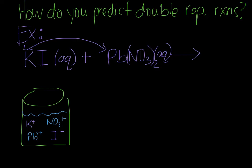These ions are just floating around in solution. The lead and nitrate are going to be attracted to one another due to positive and negative charge, and the same goes for potassium and iodide. We're going to assume these produce new compounds. A good way to do this is to figure out the charges before switching. Potassium is in group one, so it's plus one. Lead has a plus two charge because there's a two next to the nitrate. Iodine is in group 17 and has a negative one. Nitrate always has a negative one.